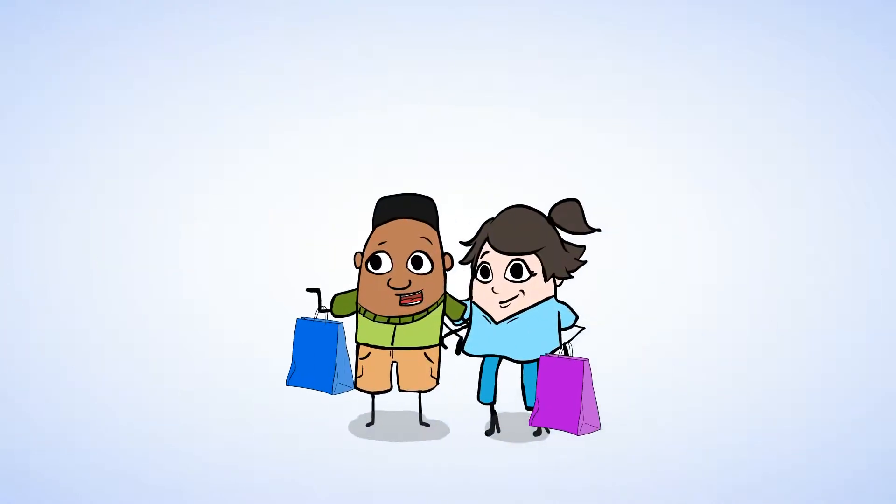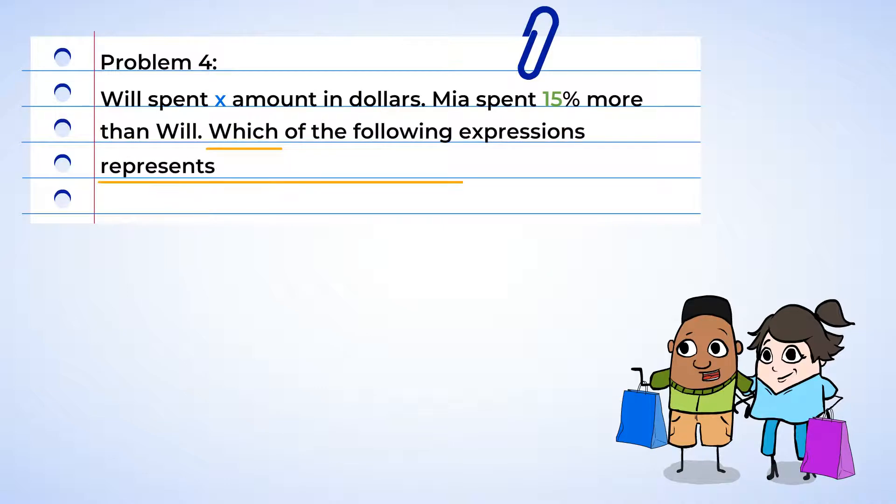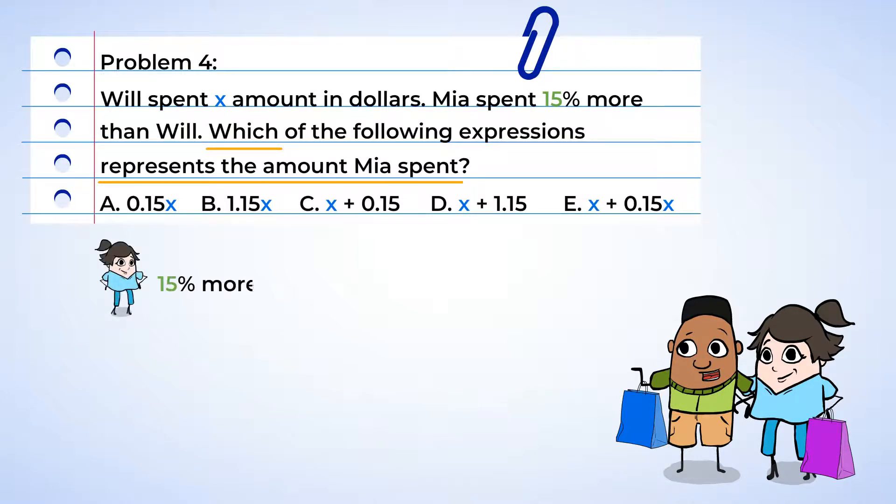Now back to Will and Mia. After Will and Mia finished shopping, they were comparing how much they spent. Will spent X amount in dollars and Mia spent 15% more than Will. Which of the following expressions represents the amount Mia spent? Well, let's create an expression and compare it to the answers given. Mia spent 15% more than Will. So we need to start by finding 15% of the amount that Will spent. And this can be represented by 15 hundredths multiplied by the variable X. Hey, look at that. That's one of the expressions given.